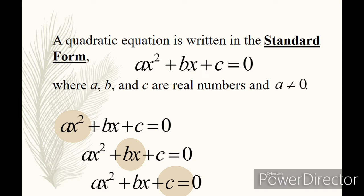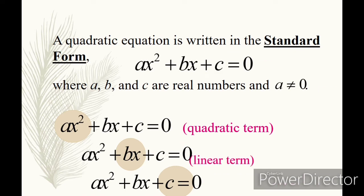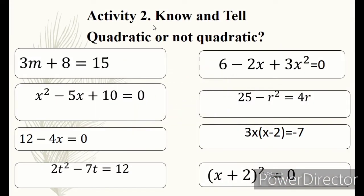A quadratic equation has three terms: ax squared, called the quadratic term; bx, called the linear term; and c, called the constant term. Always remember that we have different terms in the quadratic equation in its standard form: the quadratic term, linear term, and constant term.